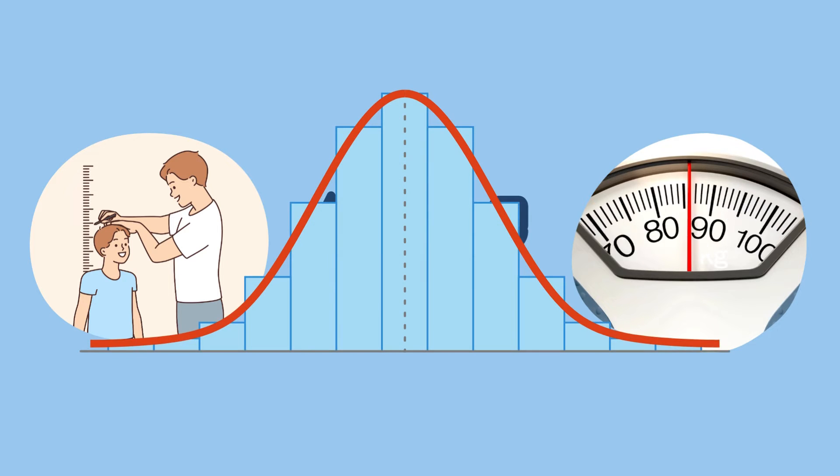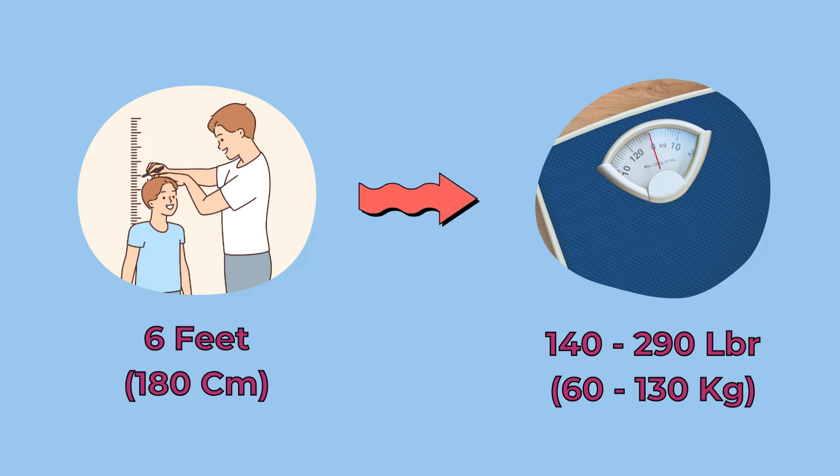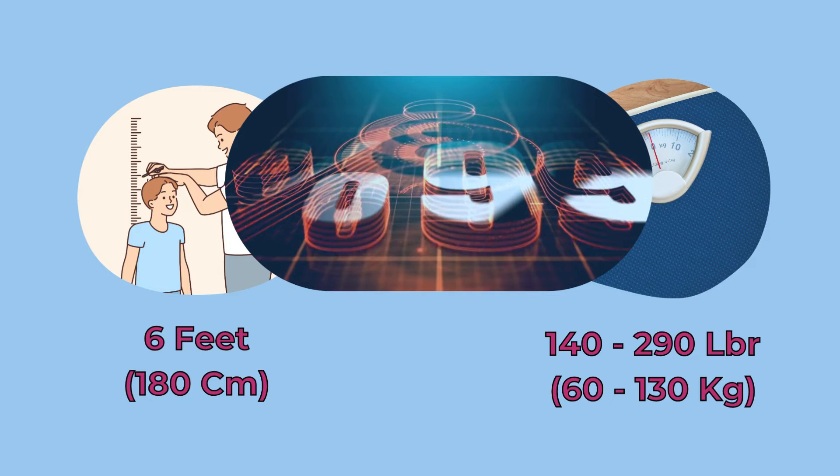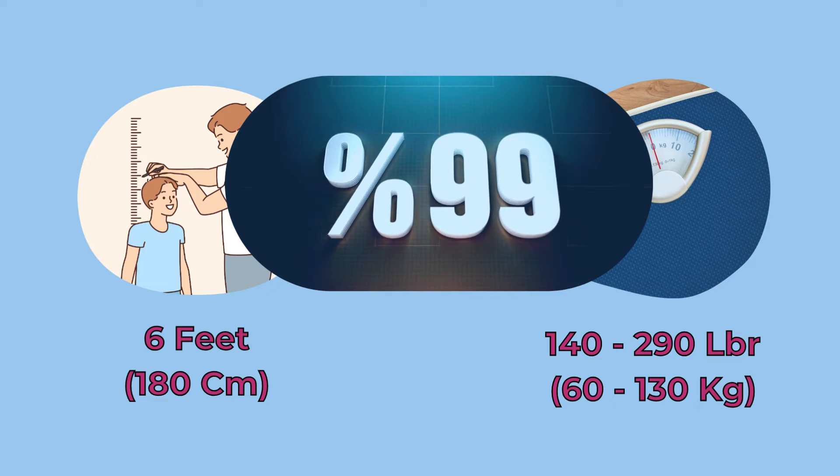However, you can make a rough estimation based on statistics. A person with a height of 6 feet will weigh between 140 and 290 pounds at a probability of 99%. We know he will not weigh 100 pounds, nor 400.